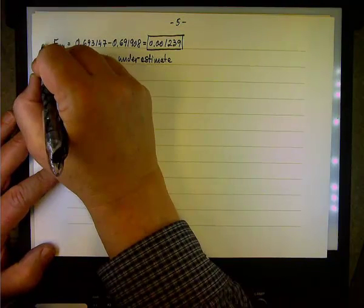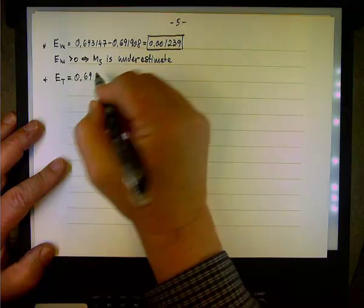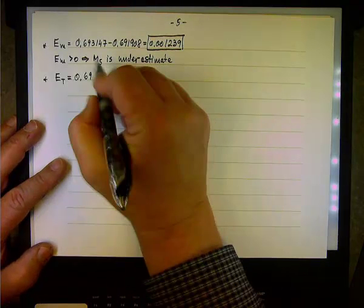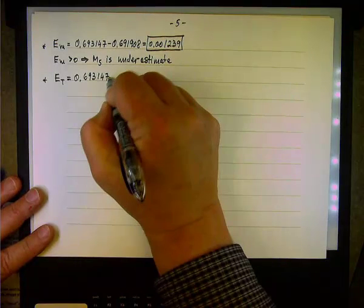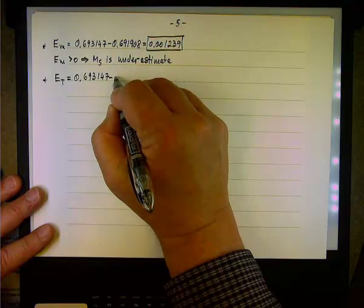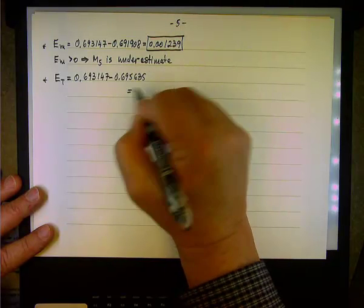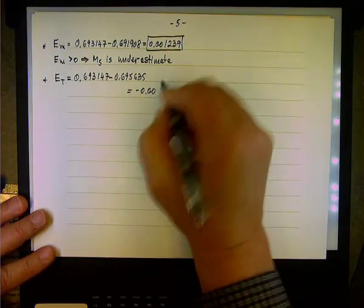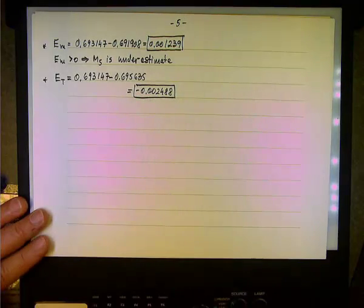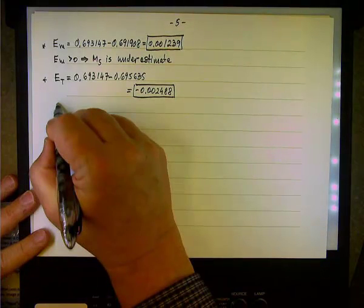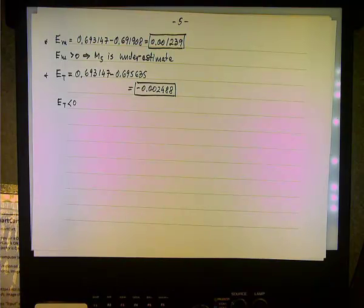Okay, so what about E sub T? Again, we'll take the exact value, correct to six decimal places. The exact value is the natural log of 2, 0.693147 is not exact. In fact, it's rounded to six decimal places. And the result of the trapezoidal method, 0.695635. And the value, the difference is negative 0.002488. So, which one is more accurate? Which error is smaller? Which technique is better in this case? The first one, the midpoint.